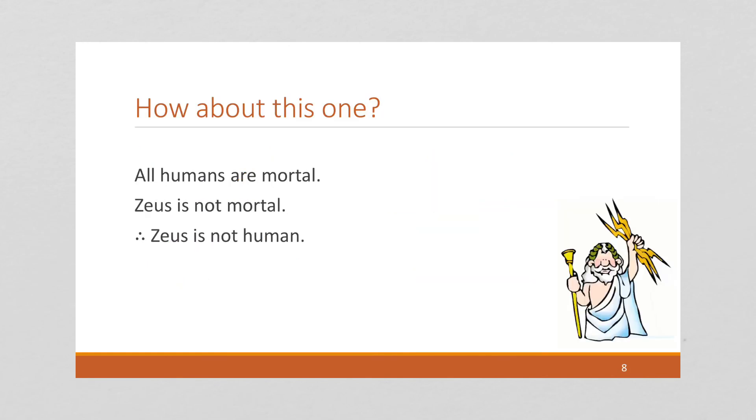Let's do one more. We're going to look at another classic argument. All humans are mortal. Zeus is not mortal. Therefore, Zeus is not human. So again, we're going to start with the argument form. For all X, human of X implies that X is mortal. We have that Zeus is not mortal. So can we logically conclude that Zeus is not human?